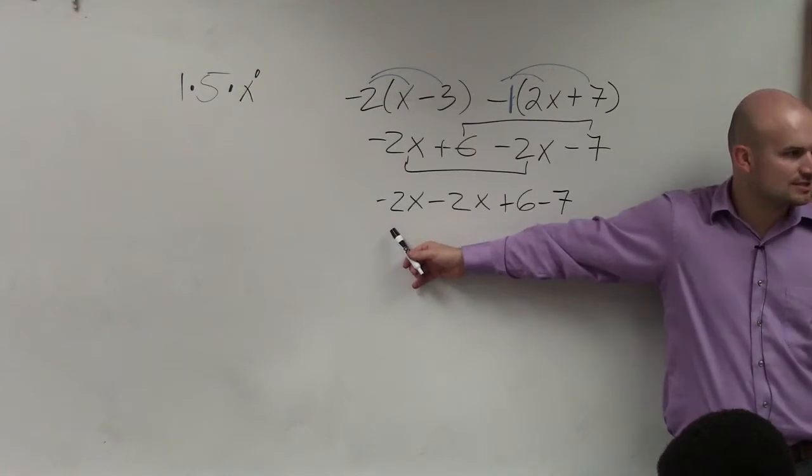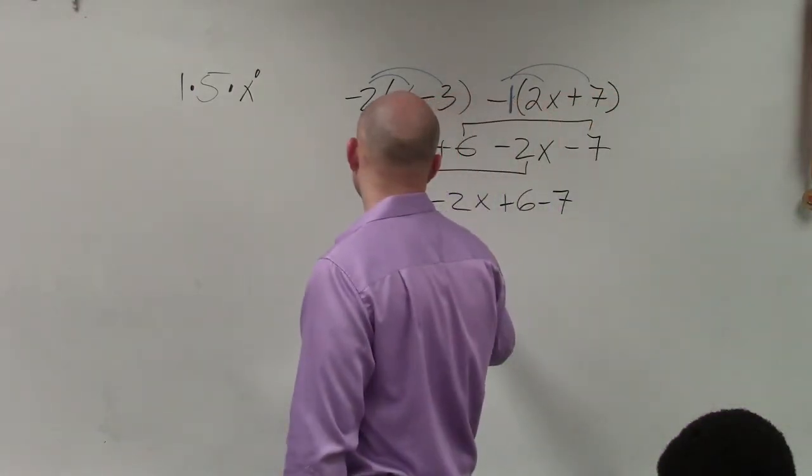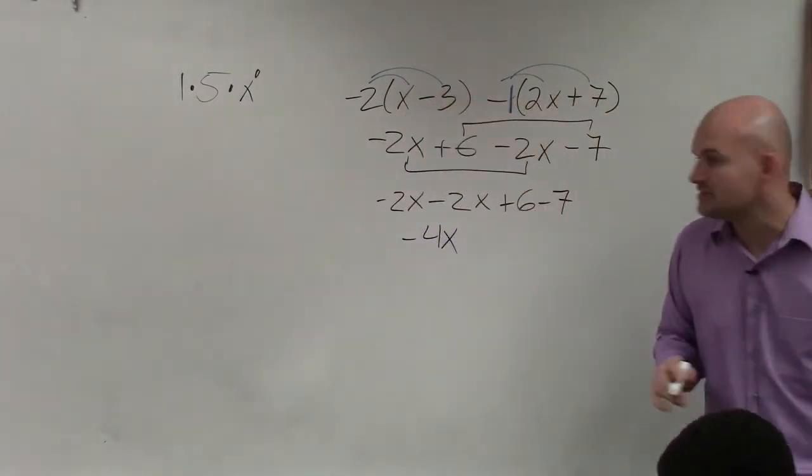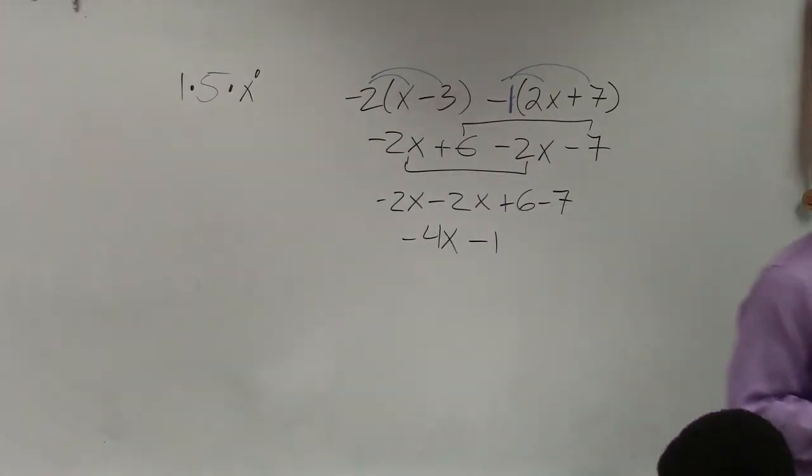If you owe $2 and then you borrow two more, negative 2 minus 2 is negative 4x. And 6 minus 7 is going to be negative 1. OK? That would be your finalized answer.